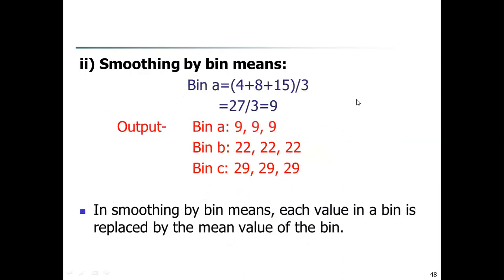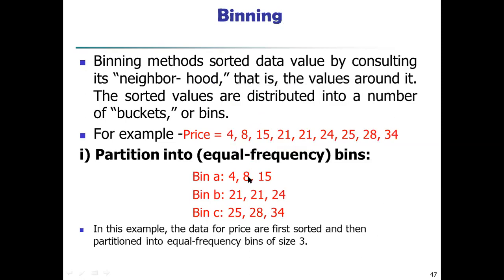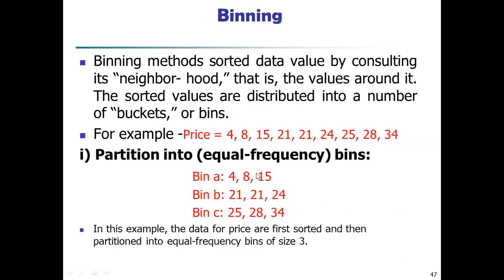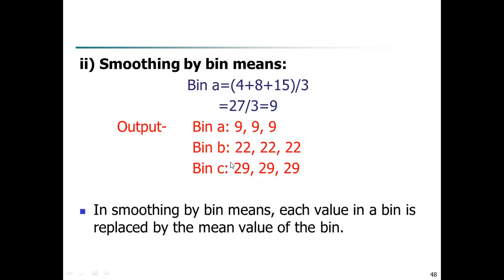Smoothing by bin means: first calculate the mean for each bin and replace all values in that bin with the mean. For bin A: 4 + 8 + 15 divided by 3 equals 9. So instead of 4, 8, 15, all values become 9. For bin B: 21 + 21 + 24 divided by 3 equals 22 — replace all values with 22. For bin C: the mean is 29 — replace all values with 29.